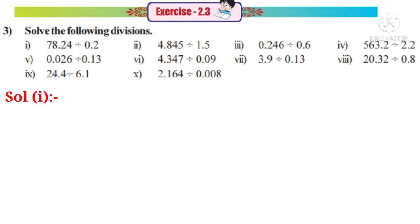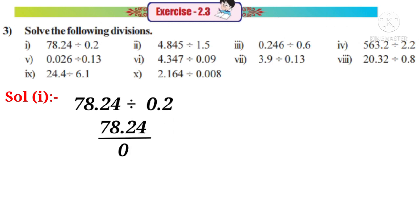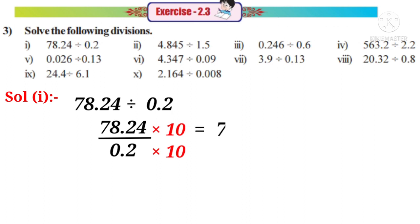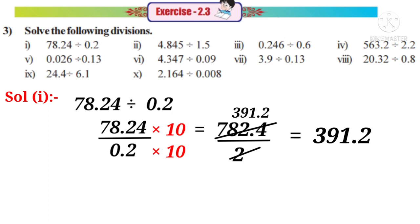Solution 1: 78.24 divided by 0.2, that means 78.24 by 0.2. Observe that there is only one decimal place in the denominator. So we have to multiply with a number which has only one zero after 1, that is by 10. So in the numerator, the decimal place shifts right side after one digit. That is 782.4 by 2. On simplification, the answer is 391.2.